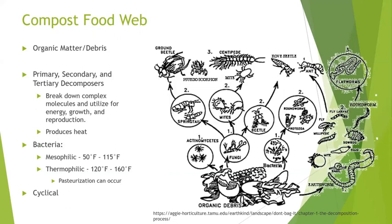Your compost food web is basically just like any other food web, but focused on your composting life cycle. Your primary decomposers — actinomycetes, fungi, and bacteria — directly break down organic matter by chemical decomposition, while primary decomposers like earthworms, sow bugs, millipedes, and fly larvae consume dead organic matter and break it down by physical decomposition. Secondary decomposers come in and consume the primary decomposers when conditions are right.